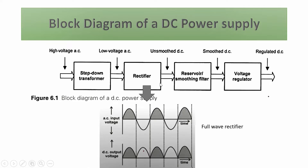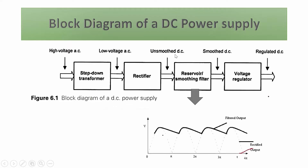The low voltage AC input is converted to unsmoothened DC, because there is a ripple in the rectifier output. This unsmoothened DC is the input for the next stage: the reservoir or smoothing filter. This stage contains a capacitor which filters the AC component present from the previous stage, converting unsmoothened DC to smoothened DC. The capacitor undergoes charging and discharging to produce the filtered output.